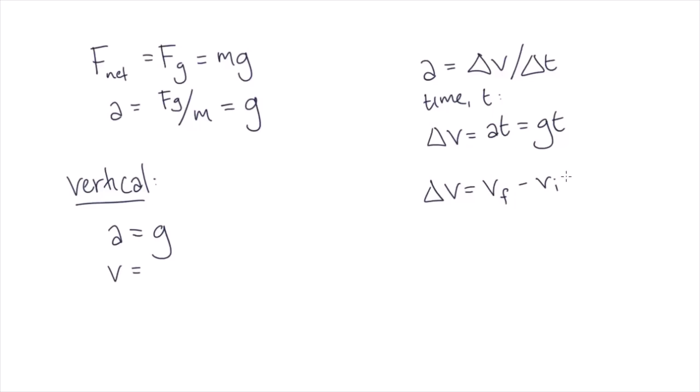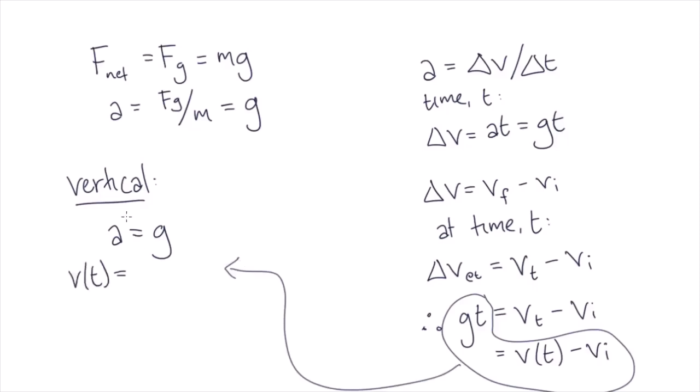We can arbitrarily choose our final time to measure, so we can see that at any moment in time, our change in velocity is equal to the velocity at that specific time minus our initial velocity. Rearranging our equations, we can find that our velocity at time t is equal to gt plus initial velocity.